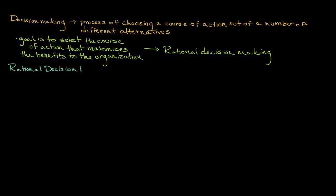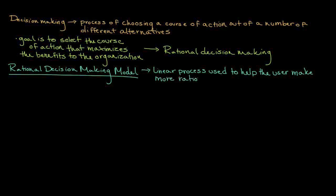So how do we do such a thing? Well, probably one of the most common frameworks for making decisions is what's known as the rational decision-making model. To summarize the model, it represents a linear process designed to help the user make more rational decisions. There are a total of six stages, each of which is intended to get the user closer to that final decision.